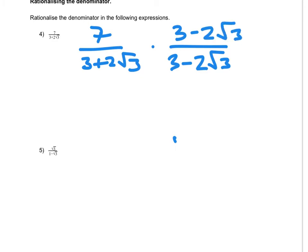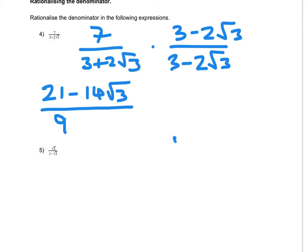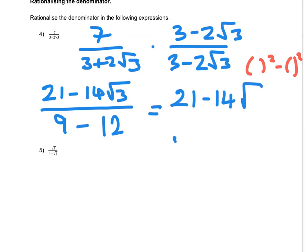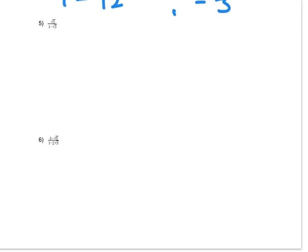Multiplying out: 7 times 3 is 21, and 7 times minus 2 root 3 is minus 14 root 3. Remember what happens when you multiply conjugates — it's the first one squared minus the second one squared. So 3 squared is 9, and 2 root 3 squared gives you 4 times 3 which is 12. So it's 9 minus 12, which is minus 3. The answer works out to be 21 minus 14 root 3, all over minus 3.